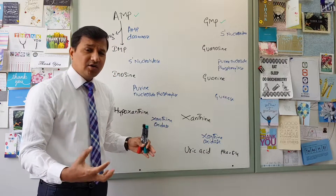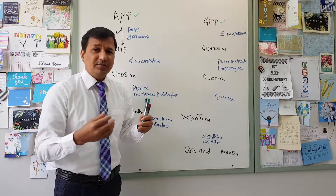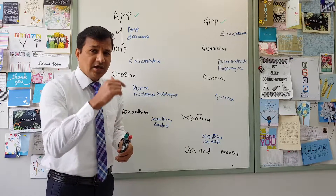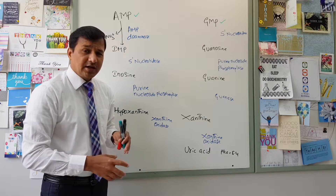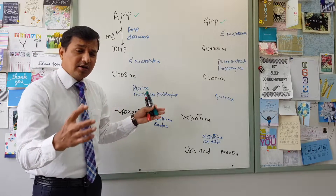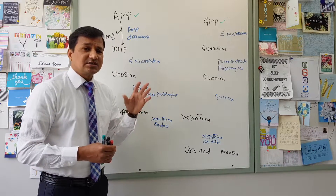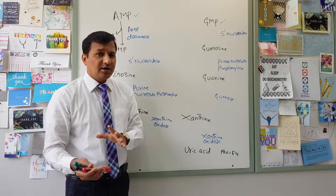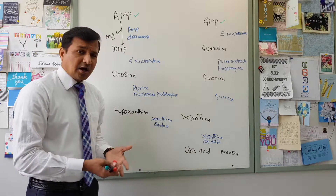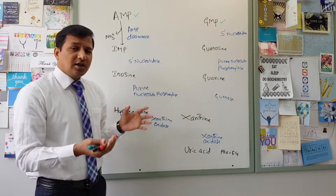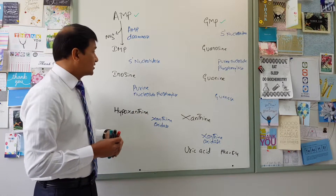I have a video on how this ammonium ion is handled, especially by the glutamate dehydrogenase reaction. Links for that video and for the complete series on purine nucleotide biosynthesis, regulation, ribonucleotide reductase, and gout are all available in the description below.